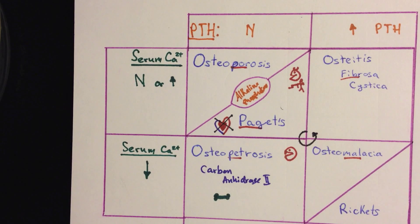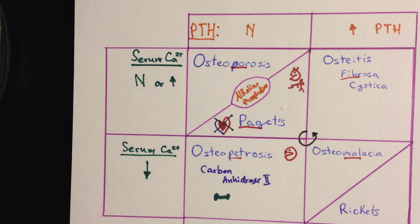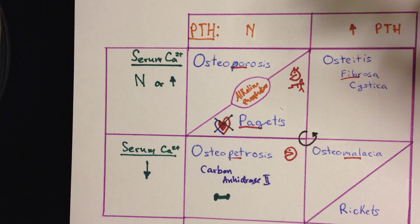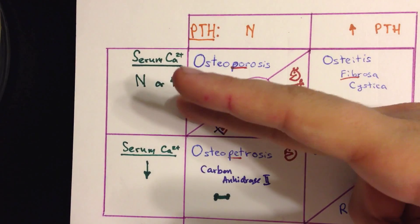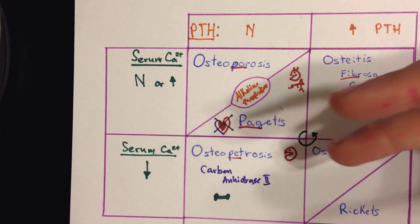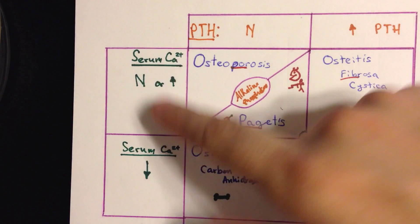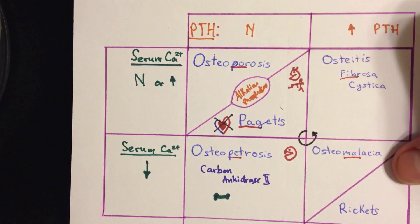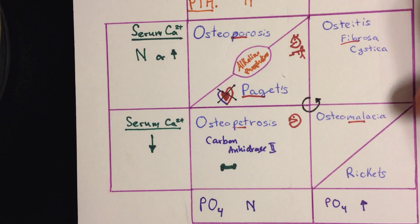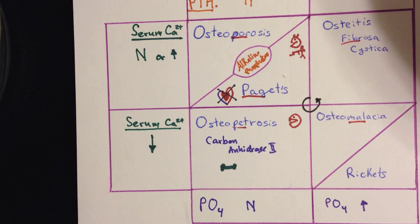We're going to begin by looking at osteoporosis. Osteoporosis is in many ways the simplest one because all the lab values appear normal, including alkaline phosphatase. That means that the PTH is normal, the serum calcium is normal, and the phosphate is normal in osteoporosis.